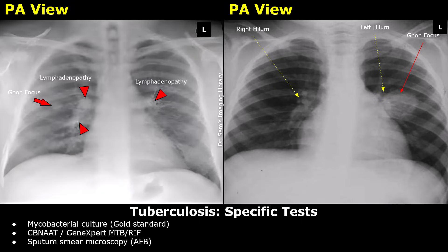CBNAAT or GeneXpert uses a sputum sample or other site-specific specimen such as bronchoalveolar lavage, pleural fluid, or lymph node aspirate. Its main use is rapid and specific detection of Mycobacterium tuberculosis, making it the preferred initial diagnostic test.